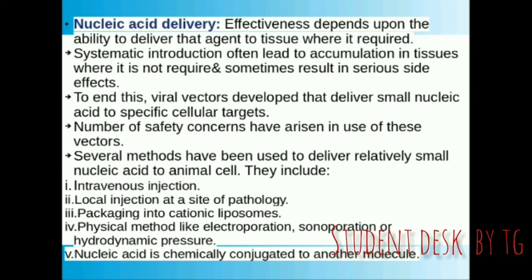We use many methods to deliver nucleic acids into animal cells with safety concerns. These include: intravenous injection, local injection at a site of pathology, packaging into cationic liposomes, physical methods like electroporation, sonoporation, or hydrodynamic pressures, and chemical conjugation of nucleic acids to another molecule. These are the methods we use to deliver nucleic acids into specific animal cells.